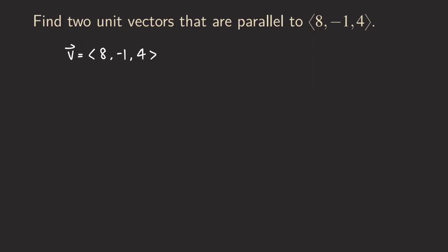So now how do we do that? The idea is actually simple. All we need to do is multiply by the reciprocal of the magnitude of this vector. Because the reciprocal of the magnitude is still positive, it doesn't really change the direction. When we take V and multiply by the reciprocal of its magnitude, that is still a positive scalar, so the vector would still be pointing in the same direction as V, which means it's parallel to V.